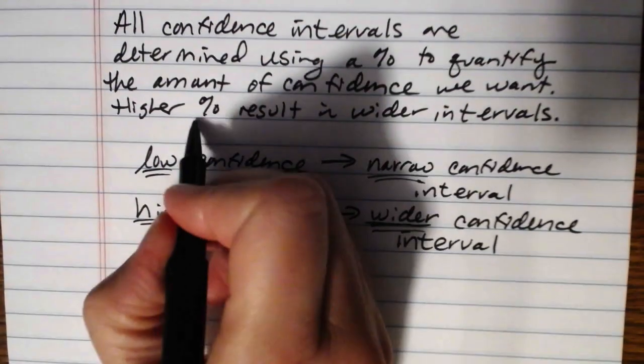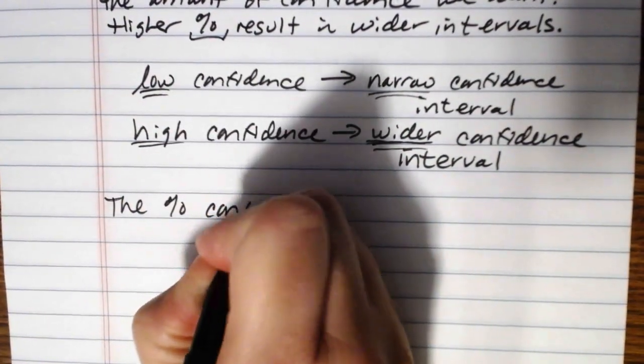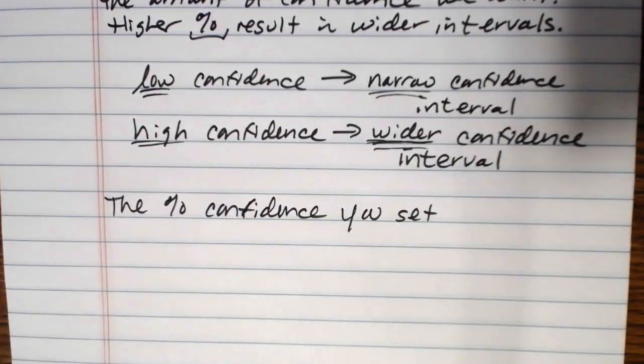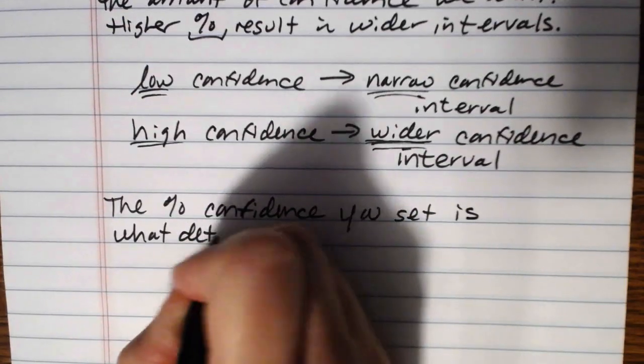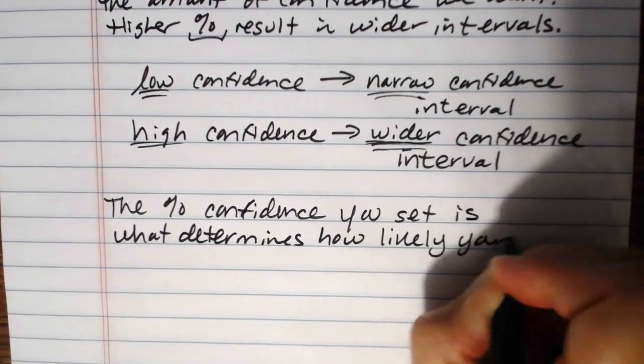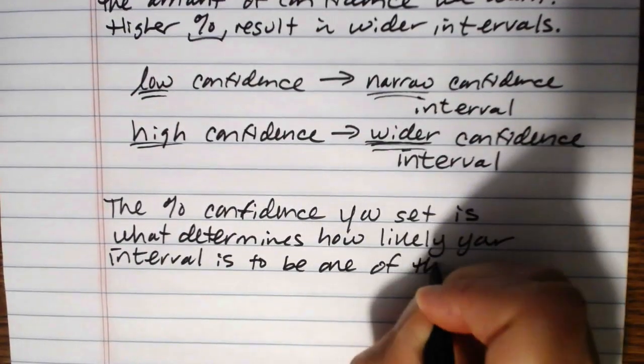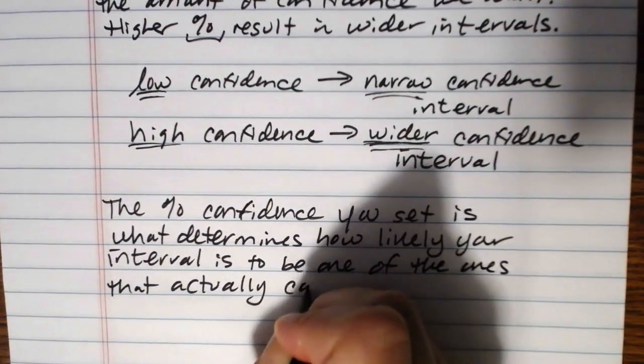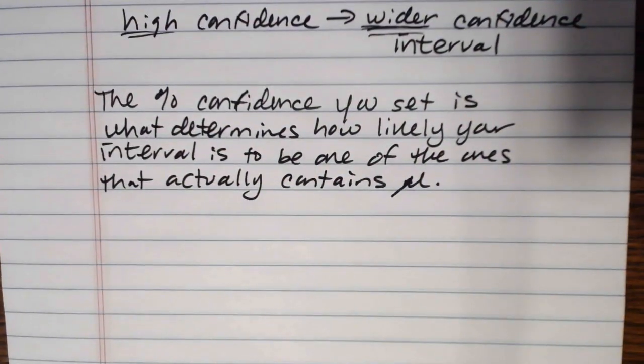Now, what is it that your percentage actually quantifies? So the percent confidence you set, this is something you get to set when you compute your confidence interval. The percent confidence you set is what determines how likely your interval is to be one of the ones that actually contains mu.